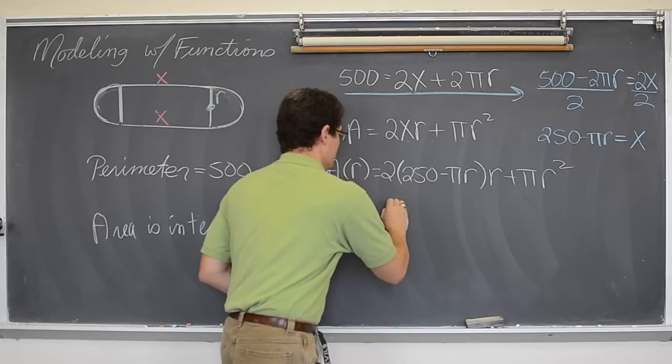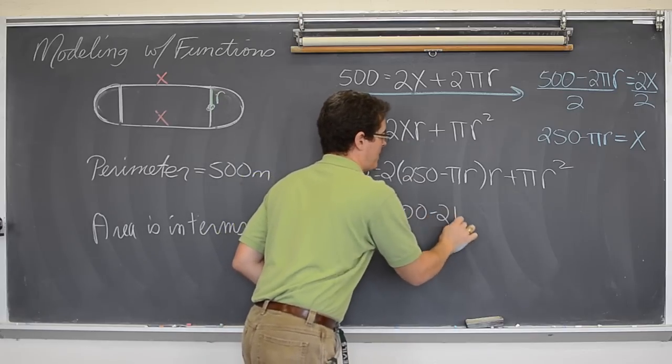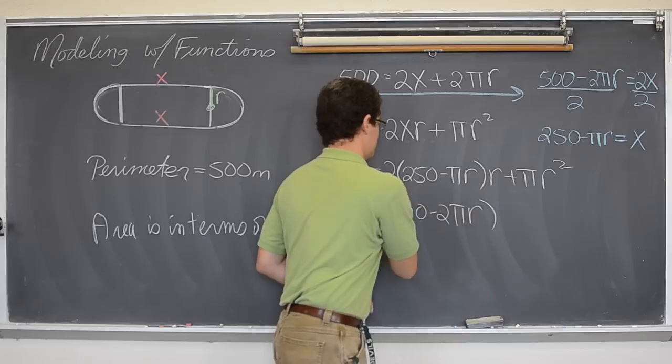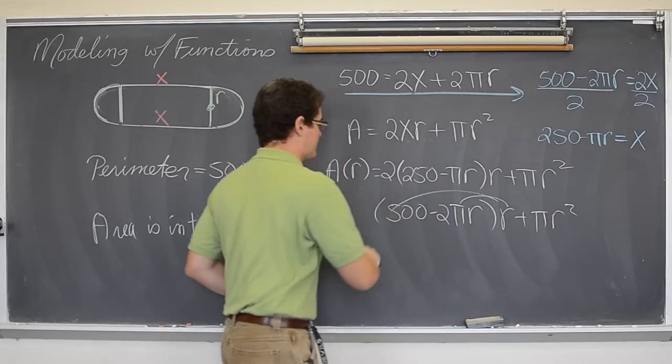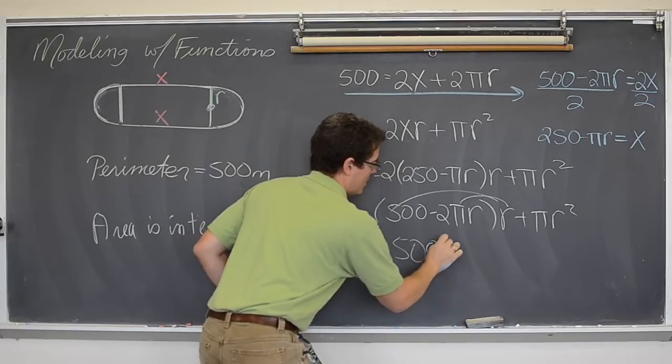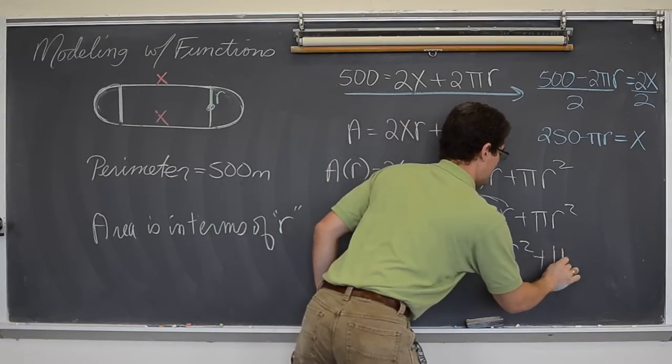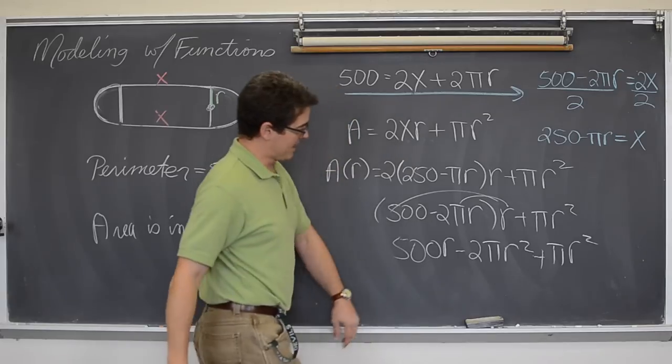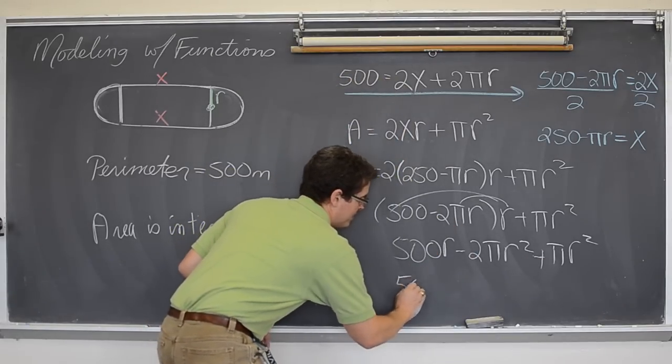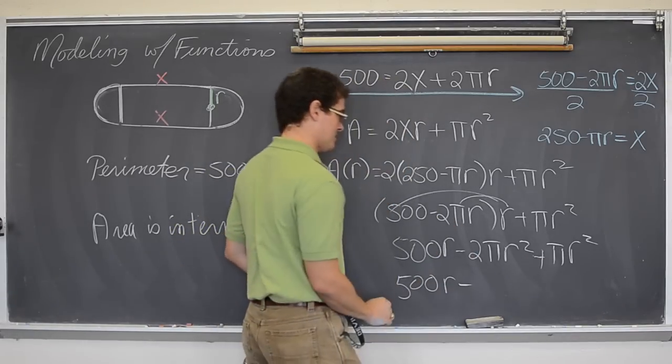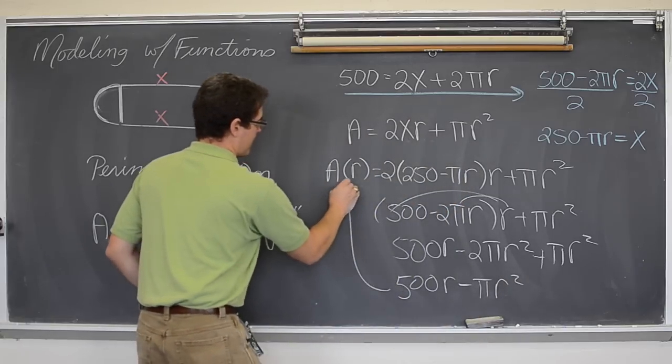And that is going to be 250 times 2 is 500, so 500r minus 2πr times r plus πr². And the last time I checked, negative 2 plus 1 is negative 1. So, 500r minus πr² equals the area.